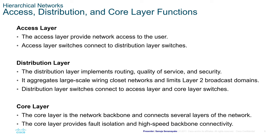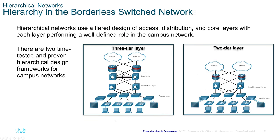The access layer provides network access to the user — essentially the endpoint of your network where devices used by actual users connect directly. The access layer is typically switches that connect to the distribution layer switches. Access layer is the last step in the entire network structure, after which we interact with the network.